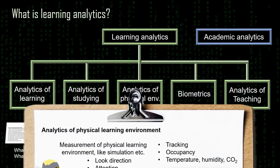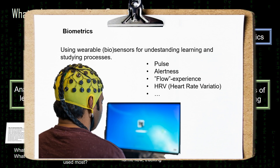Biometrics is probably the most recent branch of learning analytics. It uses wearable biosensors for understanding learning and studying processes. This could be for example using pulse or heart rate variation to find out stress levels or relaxation. There are also some studies in which researchers are trying to find whether students are in a flow state of mind.